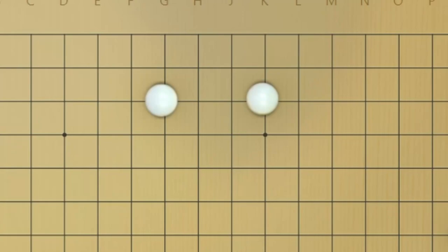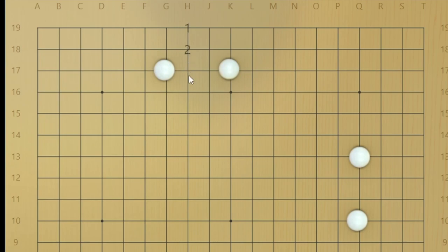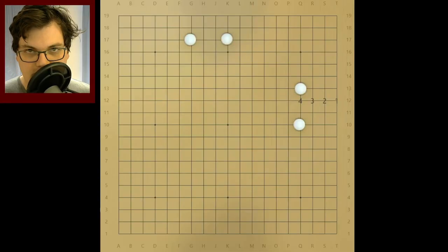This here is a two-space base. This over here is not a two-space base. A two-space base is on the third line, not on fourth line. There is a drastic difference between this. The variations change.